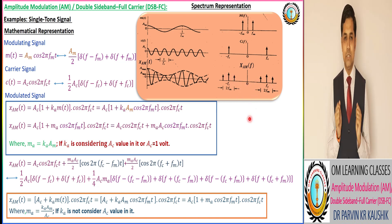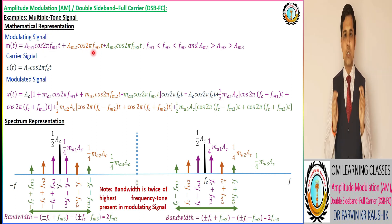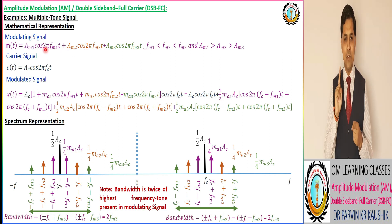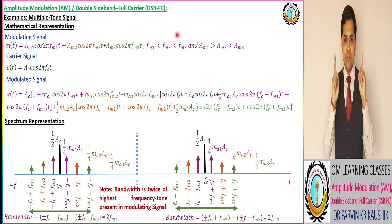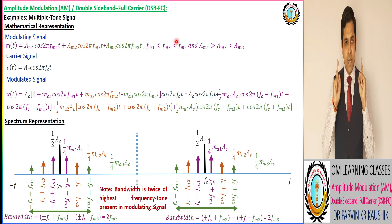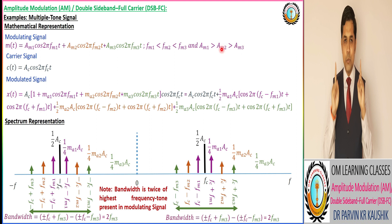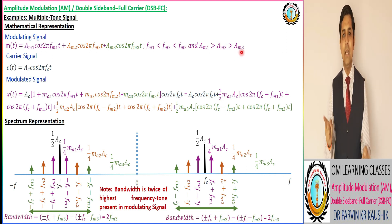Similarly, we take the example of a multi-tone signal. In a multi-tone signal, we consider the modulating signal corresponding to multiple modulating signal frequencies. As per this example, we consider a three-tone signal with three frequencies: FM1, FM2, and FM3. FM3 is the maximum modulating frequency, FM1 is the lowest modulating signal frequency, and FM2 is in between FM1 and FM3. We also note that amplitude AM1 is the largest, AM3 is the smallest, and AM2 is between AM1 and AM3.